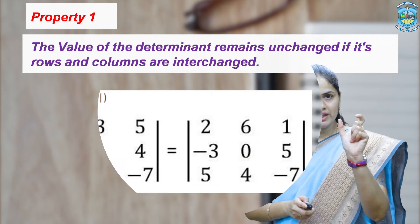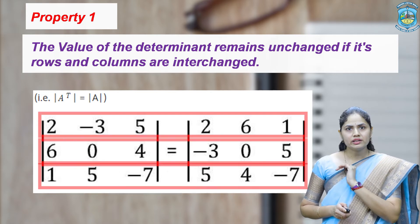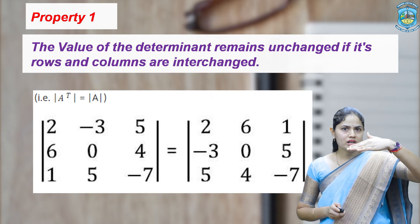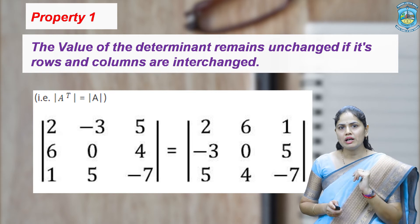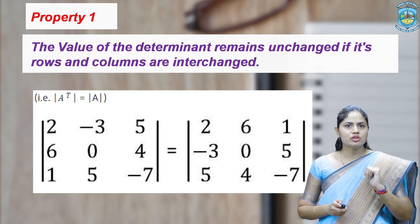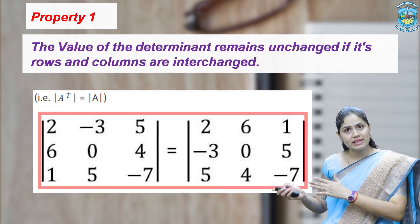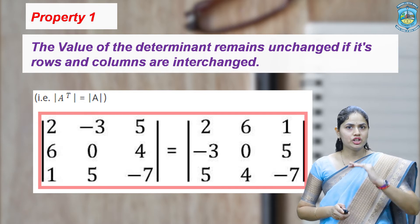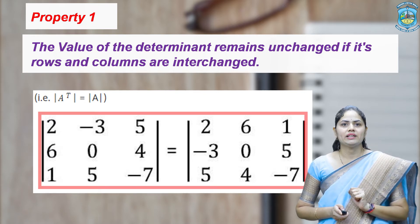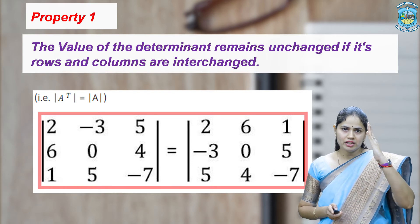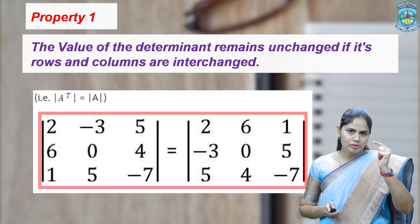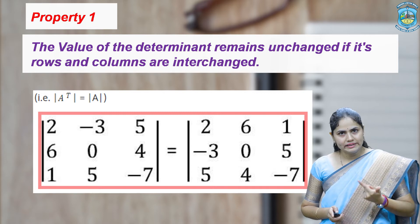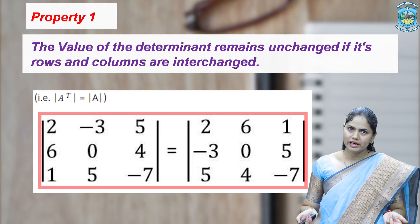Let us see with this example. This determinant has order 3 by 3, with first, second, and third rows and 3 columns. When the first row becomes the first column — meaning rows become columns — that is called interchange. When we interchange rows and columns, the value of the determinant is unchanged. In this example, the first row elements are 2, -3, and 5. When it becomes the first column, we get 2, -3, and 5. Similarly, the second row becomes the second column and the third row becomes the third column. When you solve both determinants, the values you get will be the same.